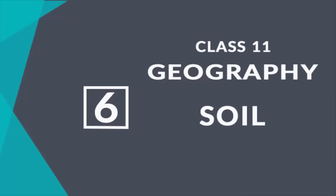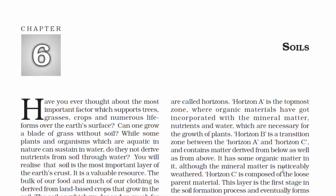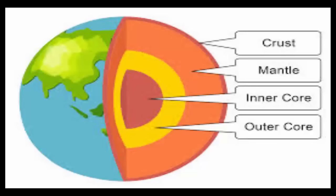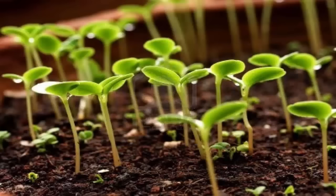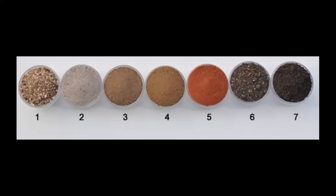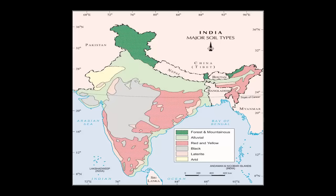Hello everyone. I'm back with a new series of videos covering chapters of geography class 11 and CRT. Chapter 6: Soils. So what is a soil? It is the upper layer of earth in which plants grow. In this chapter we will be reading about different types of soil, where they are found, and what their uses are. Let's get started.